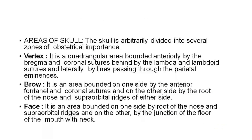Areas of the skull: The skull is arbitrarily divided into several areas of obstetrical importance. The three important ones are vertex, brow, and face. Vertex is the quadrangular area bounded anteriorly by the bregma — that is the anterior fontanelle — and coronal sutures, behind by the lambda and lambdoid sutures, and laterally by the lines passing through the parietal eminence.